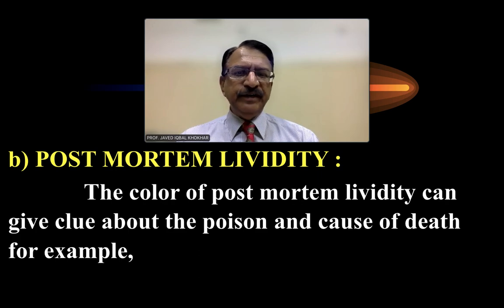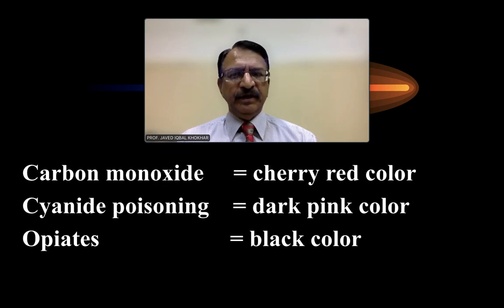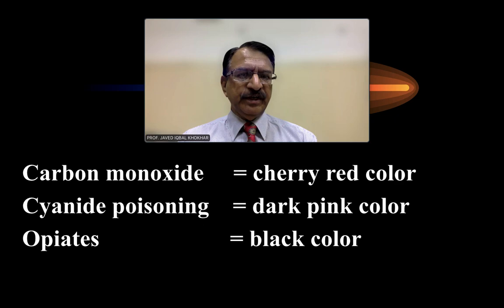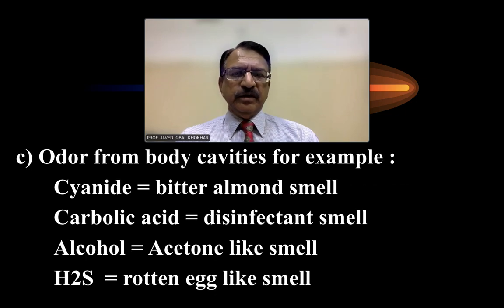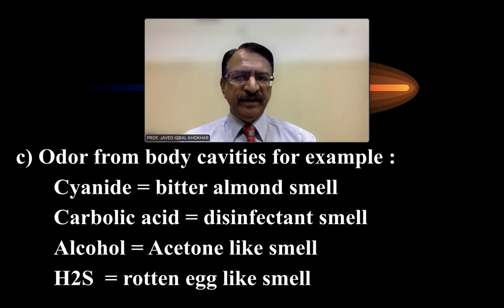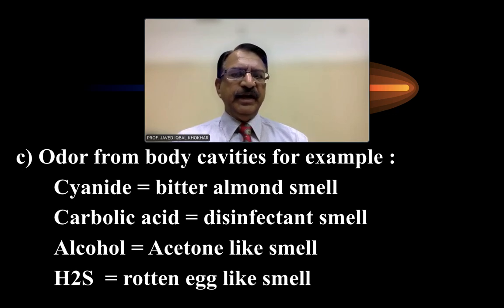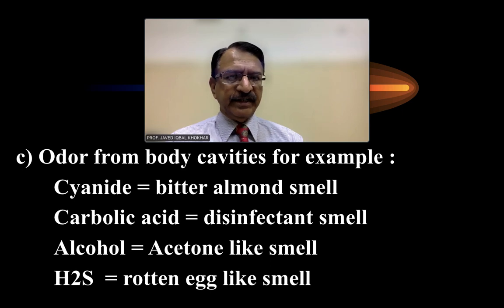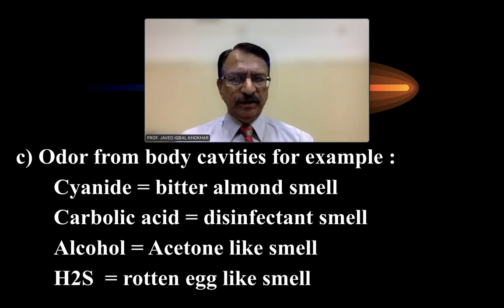The color of post-mortem lividity can give clues about the poison and cause of death. In carbon monoxide poisoning it is cherry red; in cyanide poisoning it is dark pink; and in opiates it is a dark color. The odor emitted from the body can also provide clues: cyanide gives a bitter almond smell, carbolic acid a disinfectant smell, alcohol an acetone smell, and hydrogen sulfide a rotten egg smell.